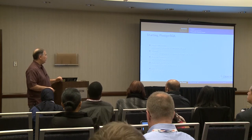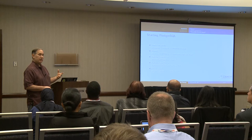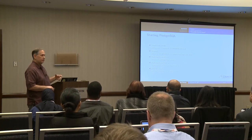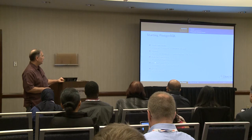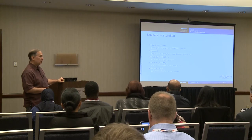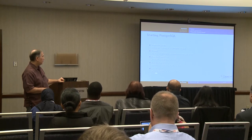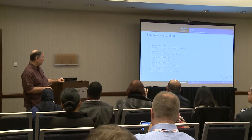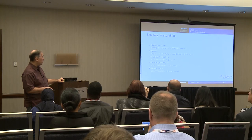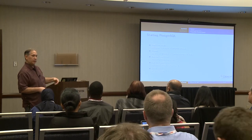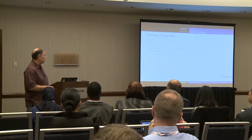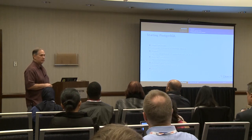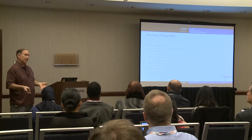If you installed from a package and you're running on a production system, you'll probably use the OS service facility. On CentOS 6, that's just 'service postgresql start'. Red Hat 7 and some Debian versions now use systemd, so it's 'systemctl start postgresql-9.5'. On a Debian-based system, they provide a script: 'pg_ctlcluster 9.5 main start'. Those are all different ways to accomplish the same thing — getting the service up and running.